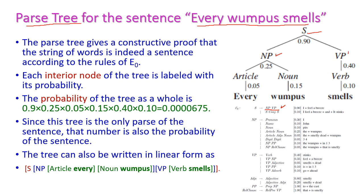S is NP followed by VP. This is the interior node which is labeled with the probability — for example 0.90. When it comes to NP, NP may be Article followed by Noun: the equivalent article is 'every' and the noun is 'wumpus'. When it comes to verb phrase, VP may be a single verb — that is 'smells'. For every non-terminal there is a probability, as given in the table, and accordingly we can select the corresponding probability to compute the probability of the entire sentence.